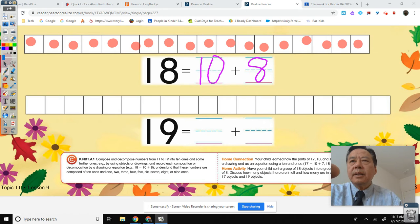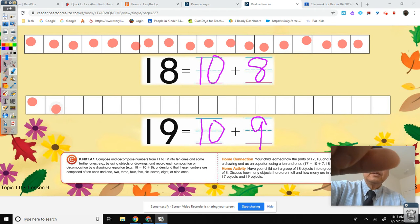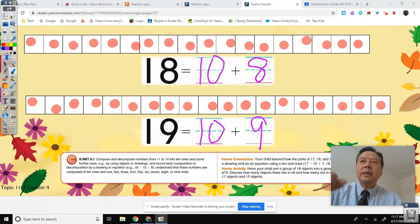All right. 19 is equal to 10 plus, say it. You got it, 9. 1, 2, 3, 4, 5, 6, 7, 8, 9, 10, 11, 12, 13, 14, 15, 16, 17, 18, 19.